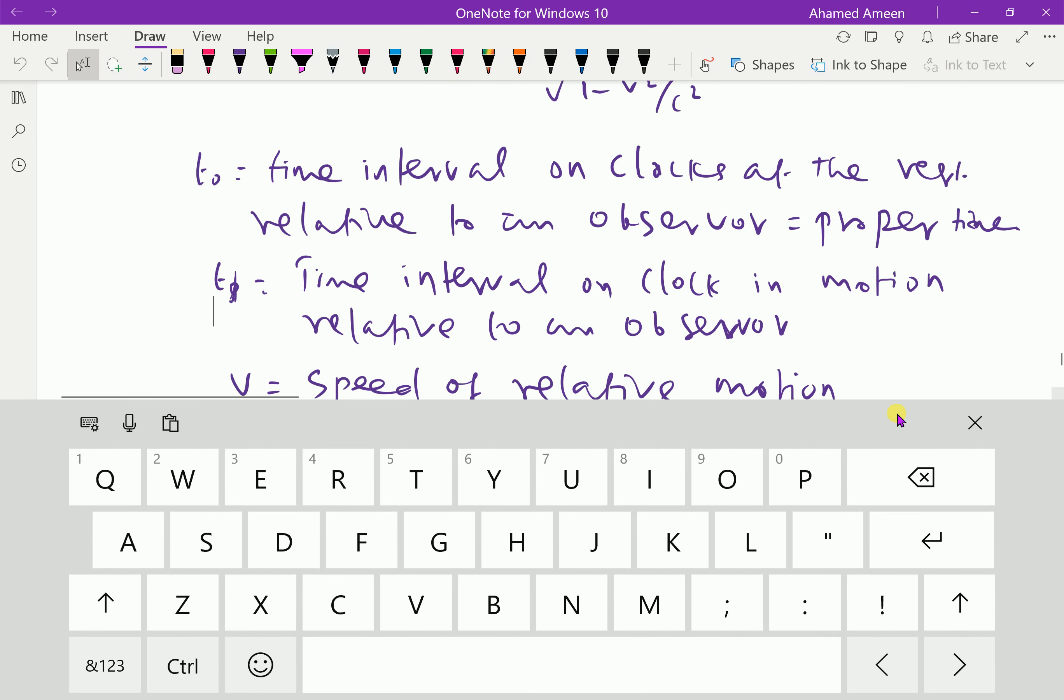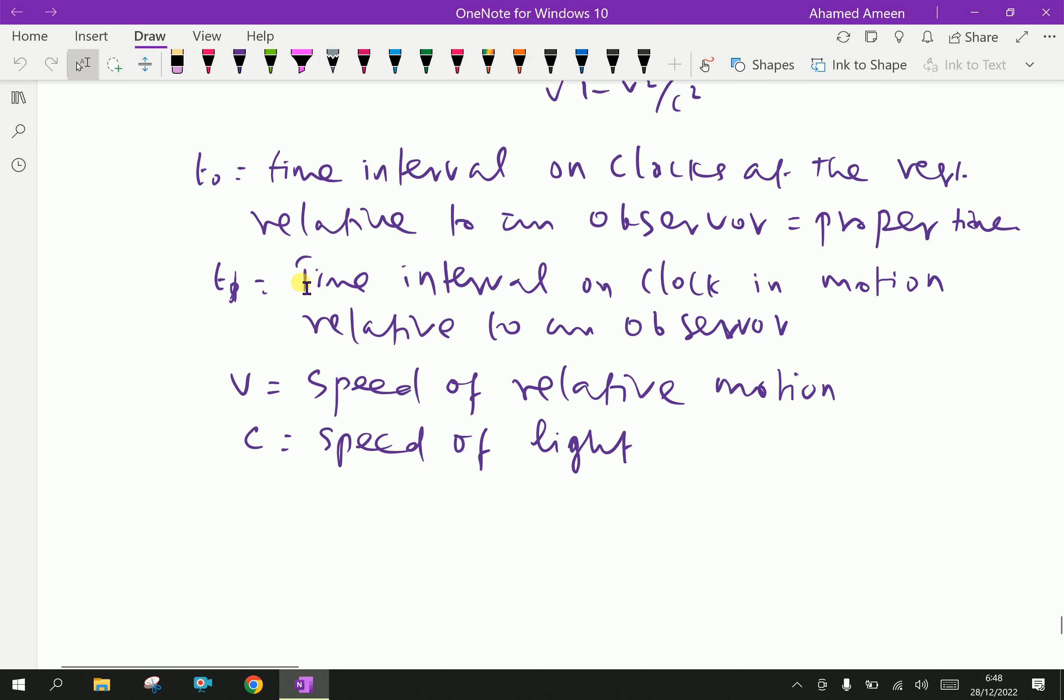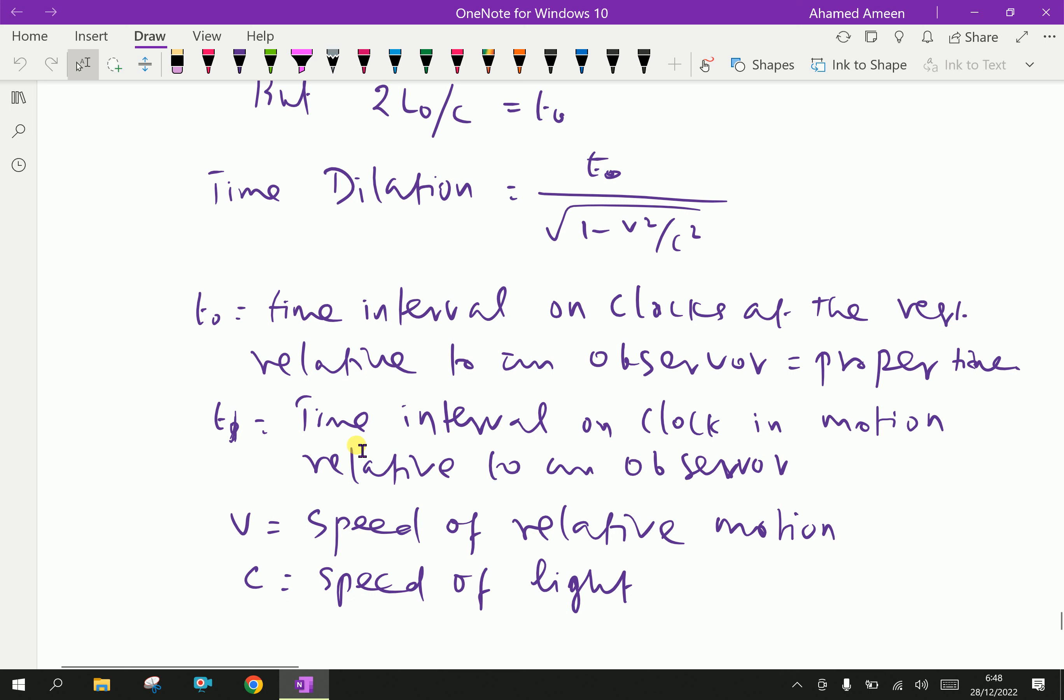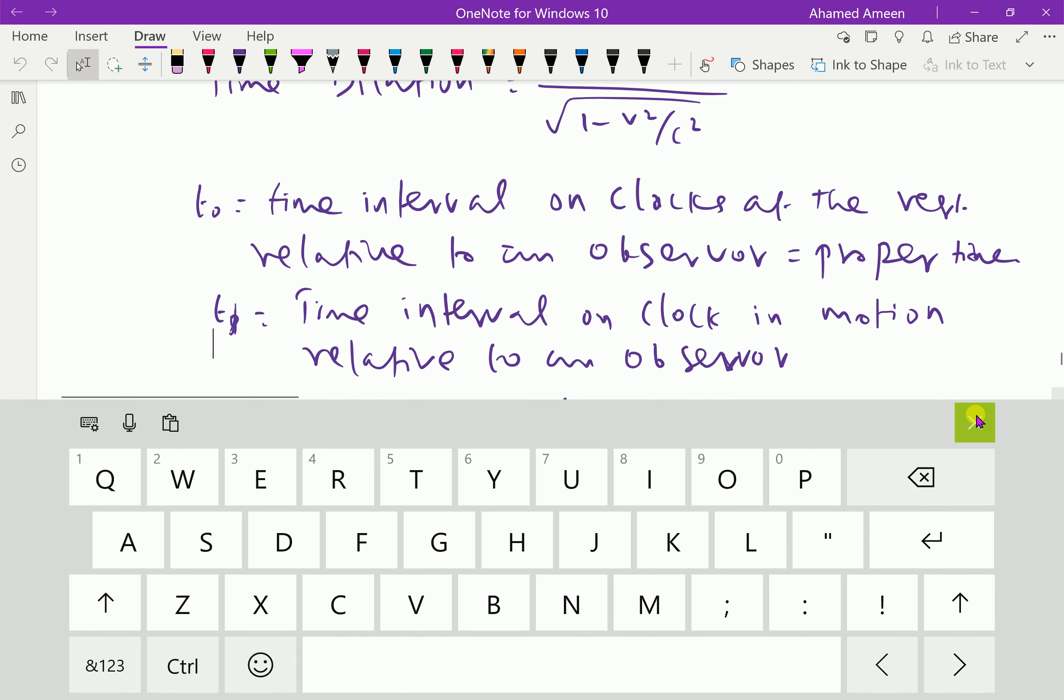Therefore, time dilation is T equal T zero by square root of 1 minus V square by C square. Like that, here, length contraction also you can find by using this relation.